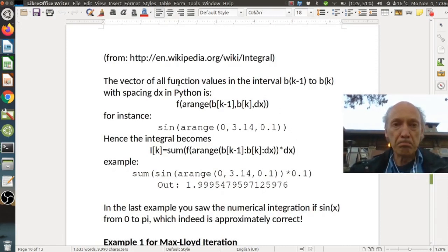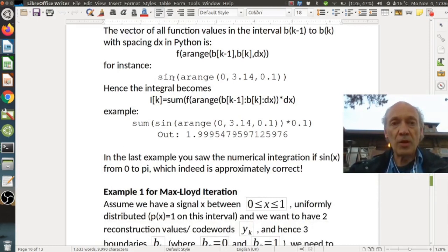For instance we could use f of a range of b_{k-1}, b_k, dx to find the function points for each of those intervals in Python. If we want to integrate the sine function, we would type sine of a range of 0, 3.14 for pi, 0.1 for dx equals 0.1, the smaller interval. Then we just use the sum function over all those function points and multiply everything with dx. And that gives us the sum of the areas as this approximation of the integral.